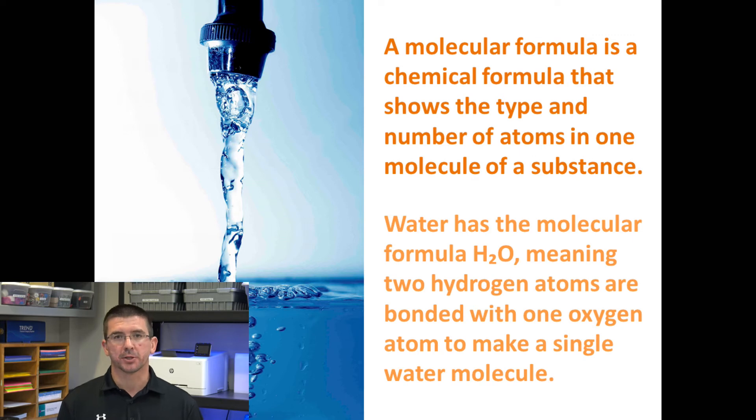We use molecular formulas to describe the atoms that make up a substance. A molecular formula is a chemical formula that shows us the type of atoms that are in something and the number of those atoms. One that most people are familiar with is the molecular formula for water, which is H2O. That means you have two atoms of hydrogen bonded with one atom of oxygen. So it's a molecule of water, but it's made up of three individual atoms.